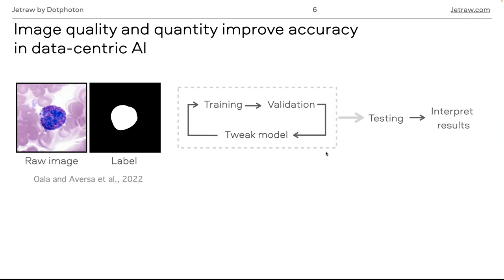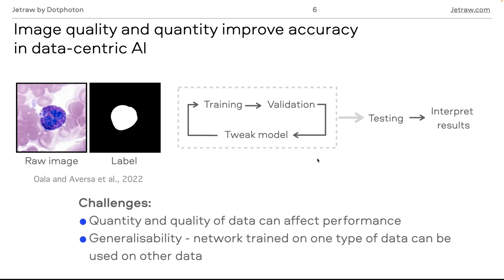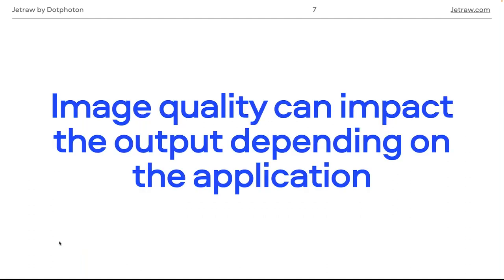Some challenges arise that can be addressed through model architecture or through the data. For example, the quantity and quality of data during training and validation can affect network performance. There is also the challenge of generalizability — when you train a network with certain data, how can you then apply it to a different type of data? This is something Bruno will cover later. But first, let's look at how image quality can impact the output, which of course depends on the application.